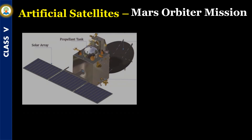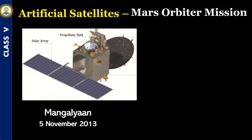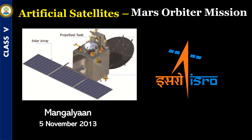The Mars Orbiter Mission, also called Mangalyaan, is a space probe orbiting Mars since 24 September 2014. It was launched on 5 November 2013 by the Indian Space Research Organization. It is India's first interplanetary mission. India became the first country to successfully complete a maiden Mars mission and the fourth country to successfully venture into Mars.